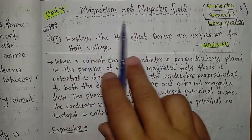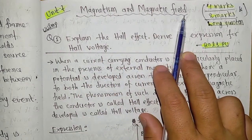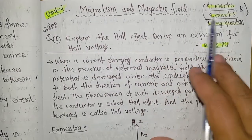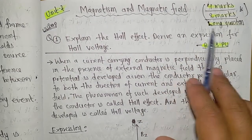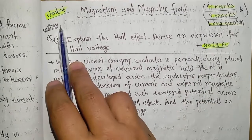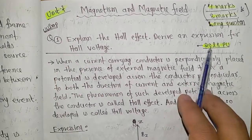This topic on magnetism is very important. Questions worth four marks or eight marks can come from this section in university exams.